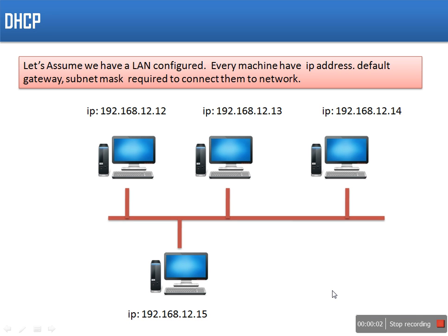Hello friends. In this lecture I will explain DHCP protocol. DHCP actually stands for Dynamic Host Configuration Protocol. This protocol is used to provide network details to a new device. For example, when you connect your device to a Wi-Fi network, your device automatically gets its own IP address. There must be some device providing these details. In this lecture, we will see how DHCP works.